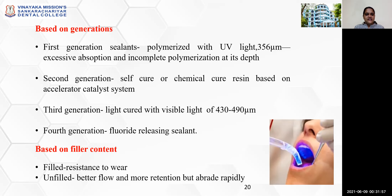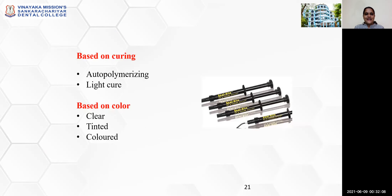Based on filler content, sealants are classified as filled sealants, which are more resistant to wear, and unfilled sealants, which have better flow and more retention but abrade rapidly. Based on curing, there are two types: auto-polymerizing and light-cured. Based on color, they are clear, tinted, or colored.